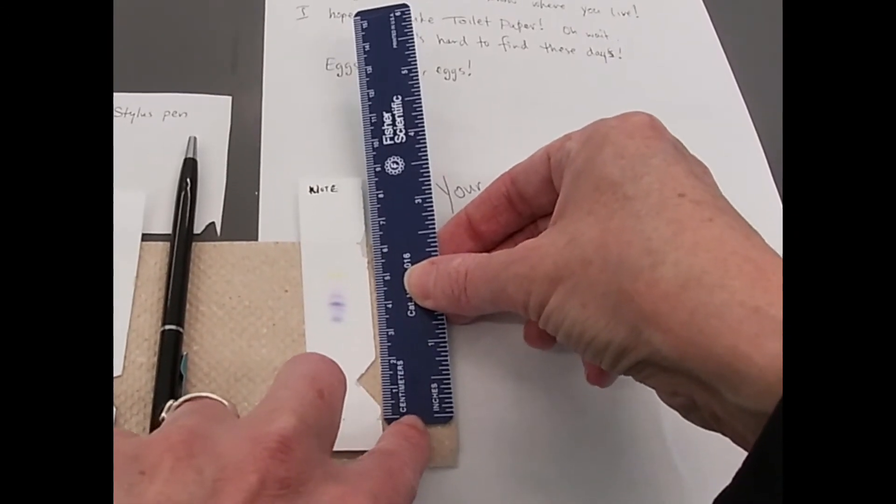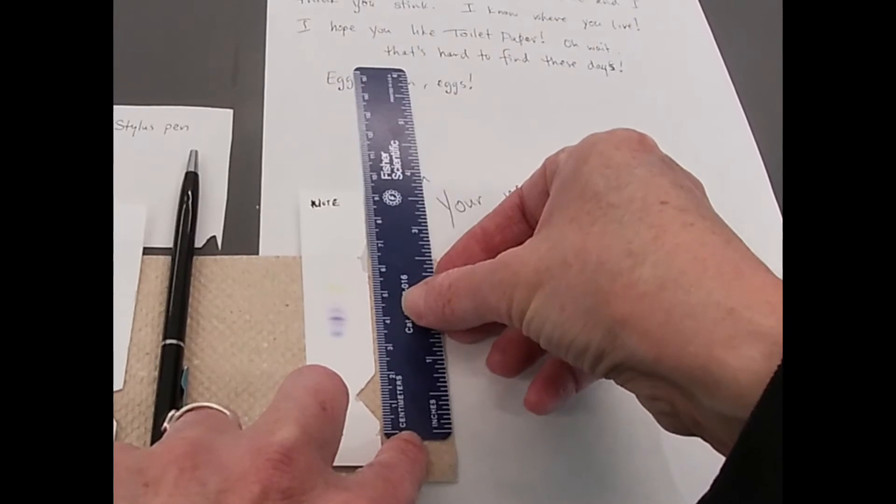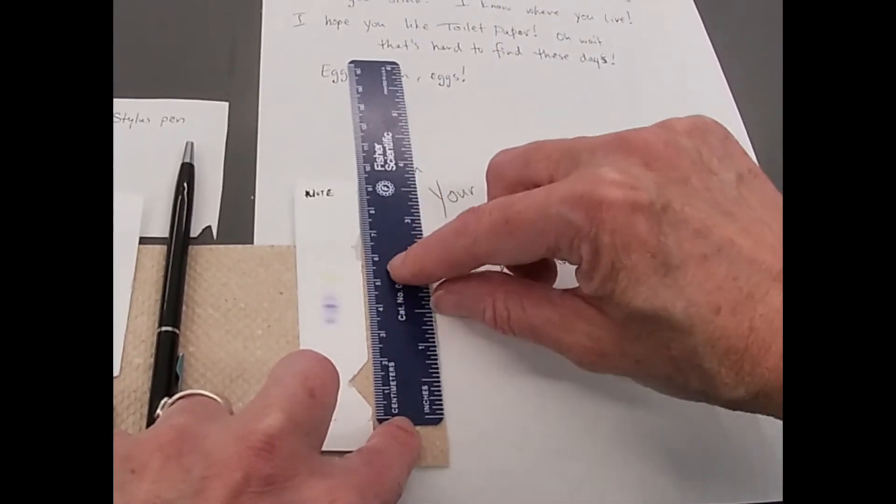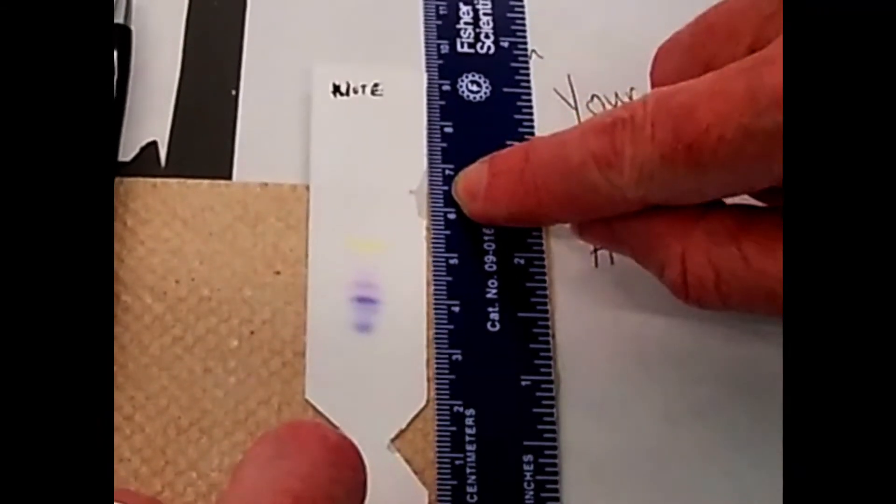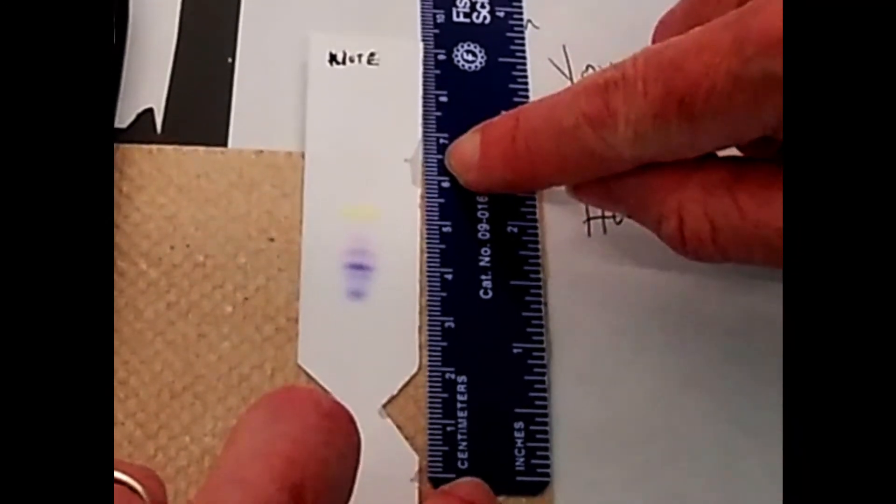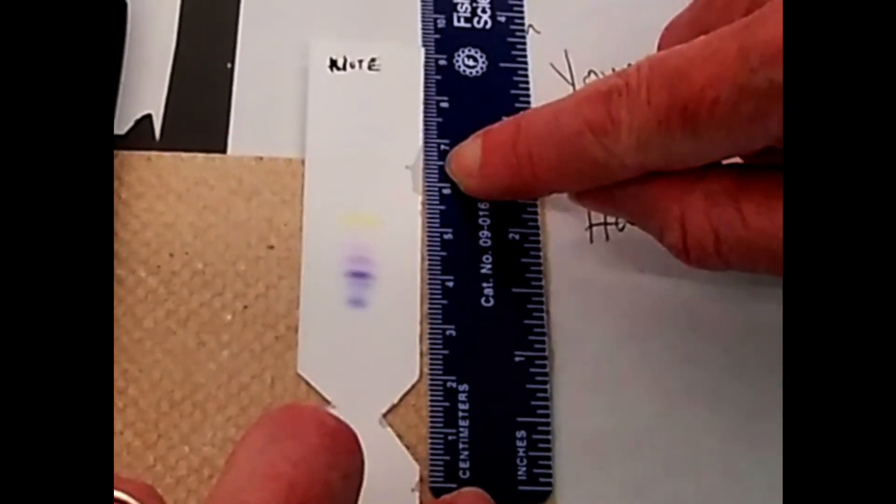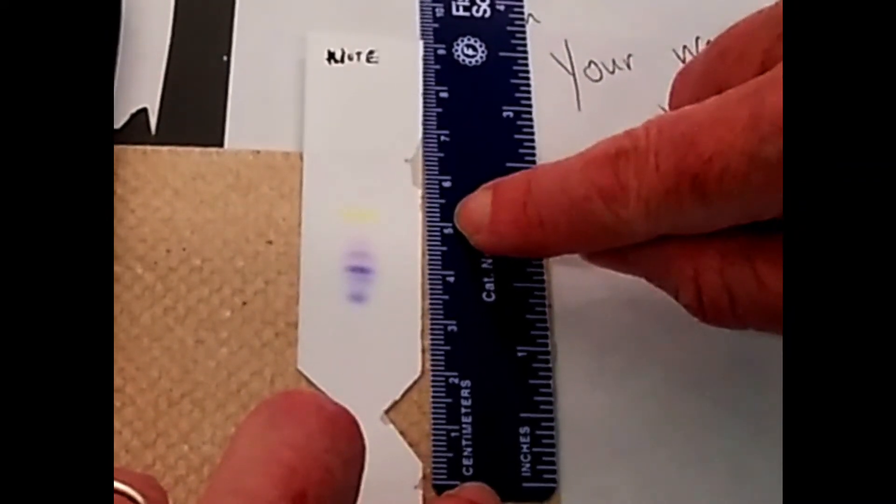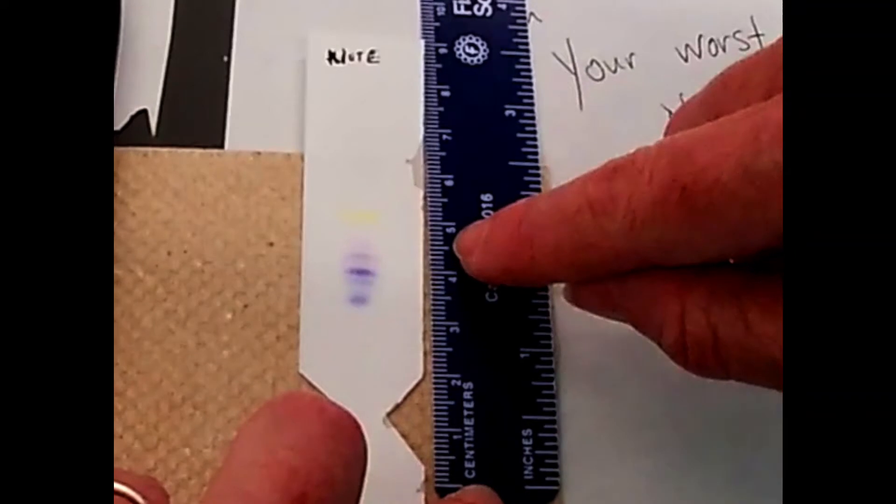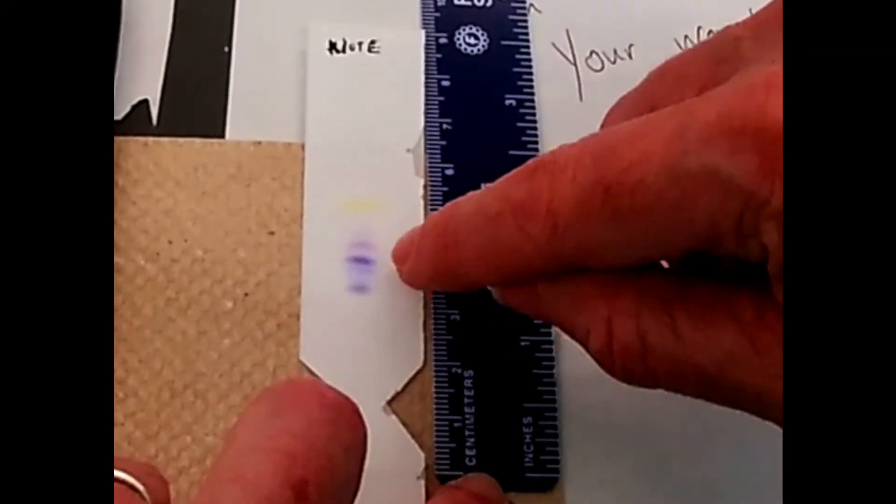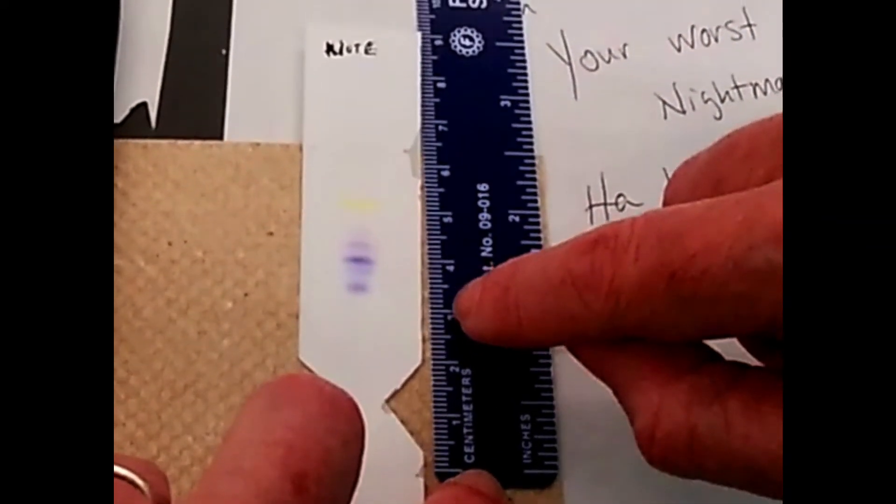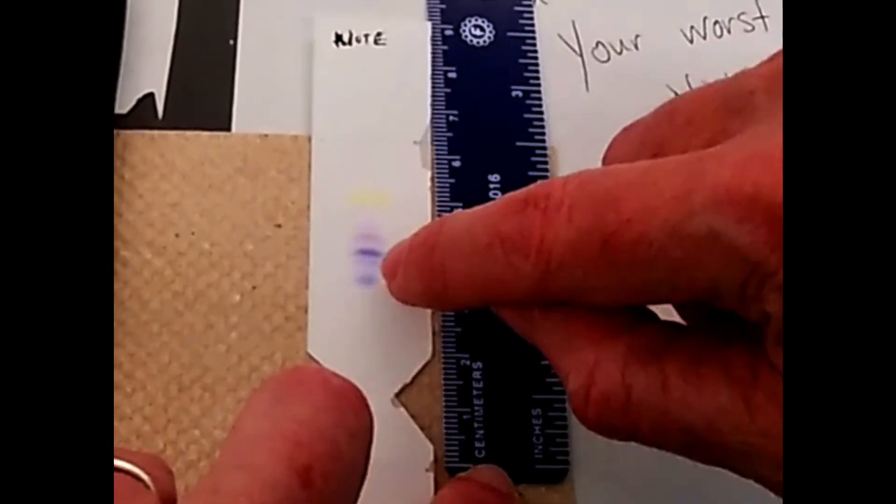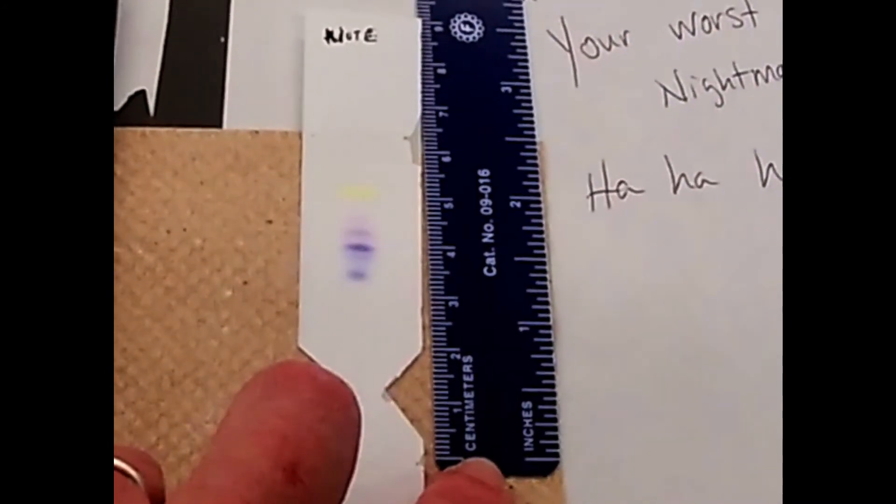So basically we started at about one centimeter up. In this case our solvent front moved just under, it's about 6.4 centimeters, whereas our yellow band moved a little over five centimeters. And then we have some additional magenta colored bands, some purple bands and blue bands that move different distances. And so for each of these we'll calculate a retention factor,